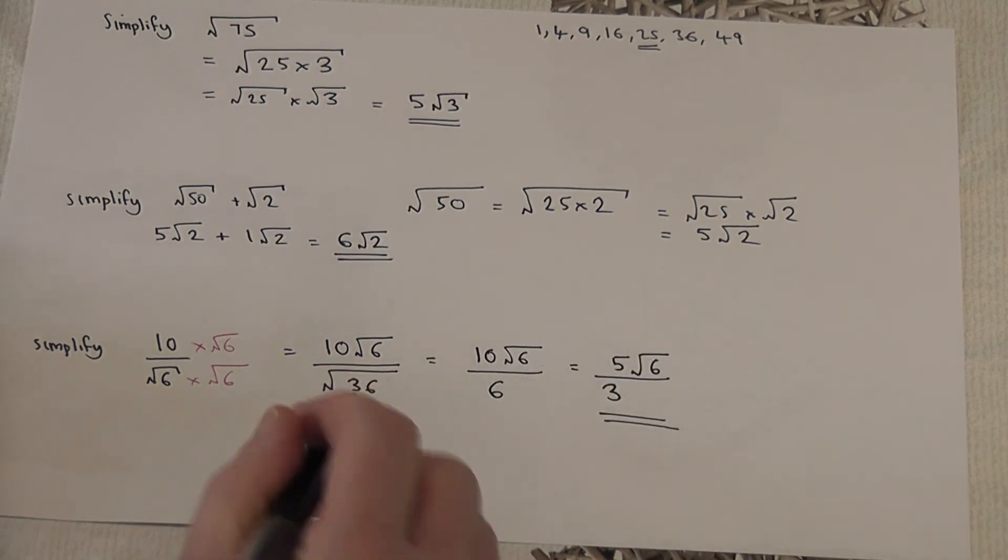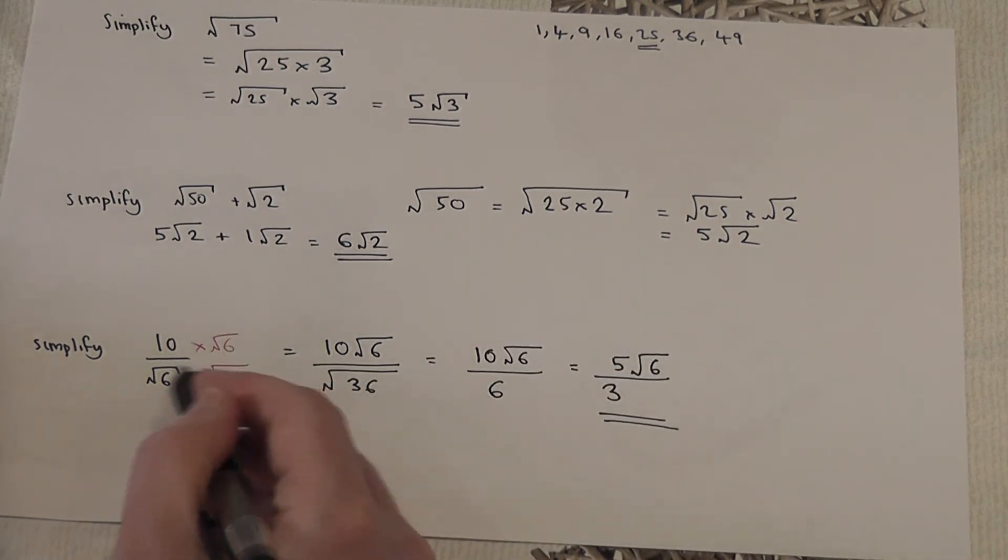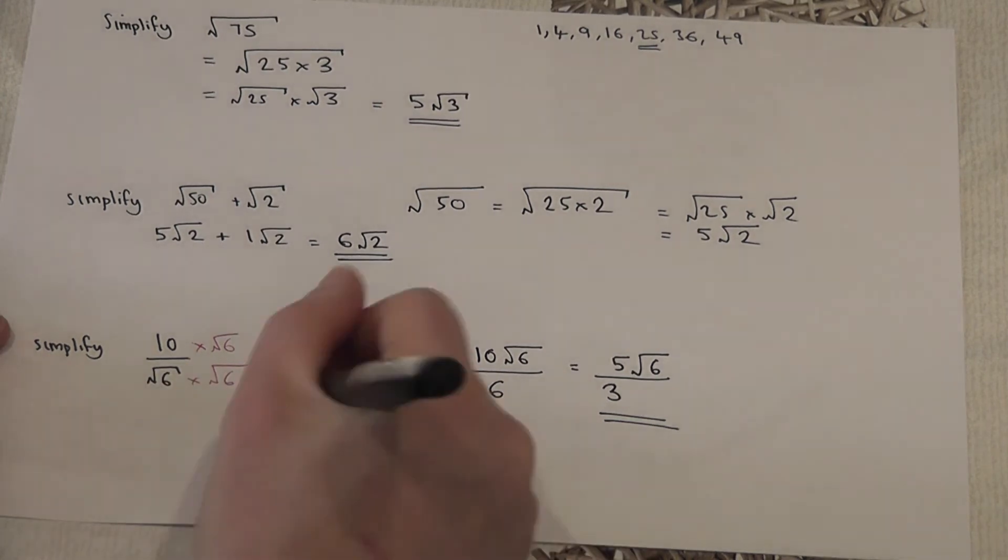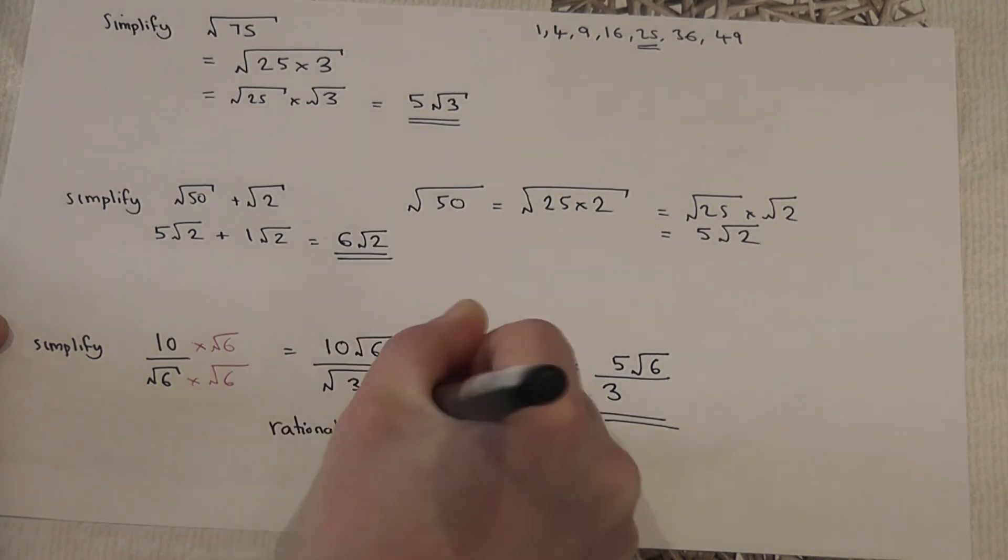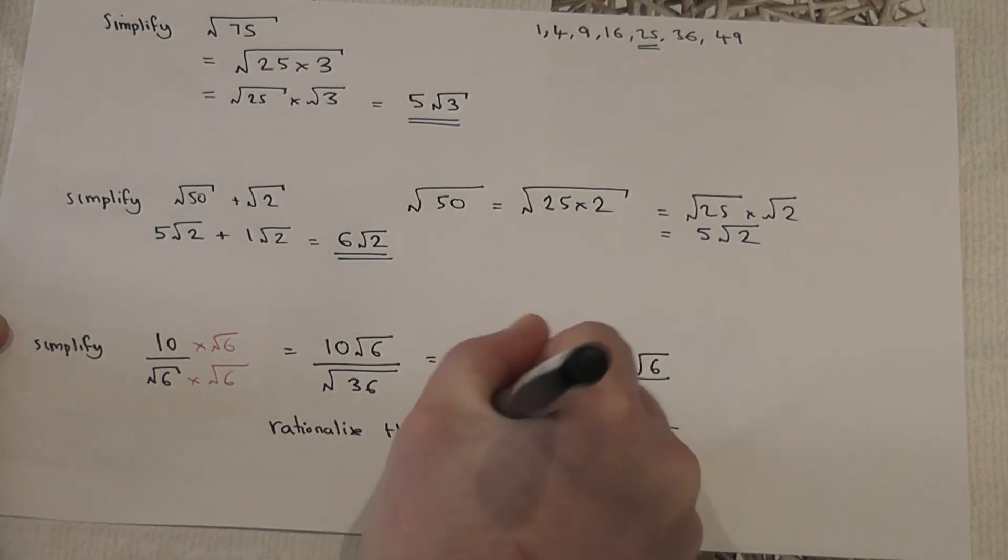So again, we multiply the top and bottom by the surd. And the posh name for this is called to rationalize the denominator.